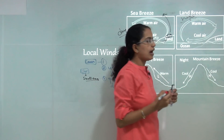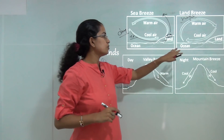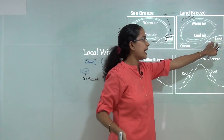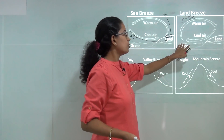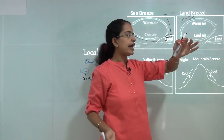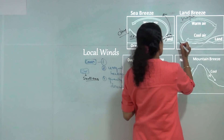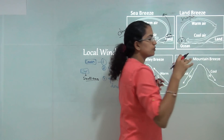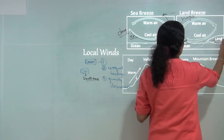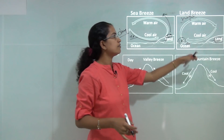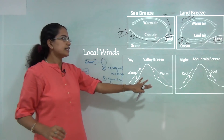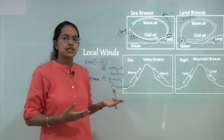During the night, the reverse happens. The ocean, which was unable to cool at the same rate as land, becomes warmer than the land. Air from the ocean rises, creating a zone of low pressure over the ocean. Wind then moves from the land — which is at higher pressure — to the ocean, forming the land breeze circulation.